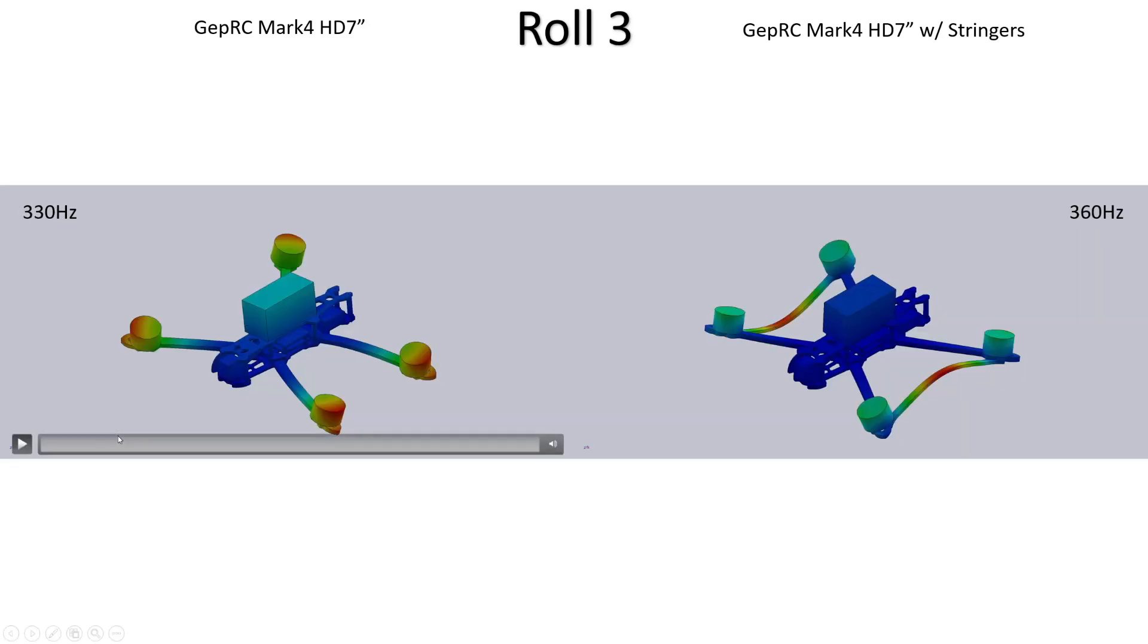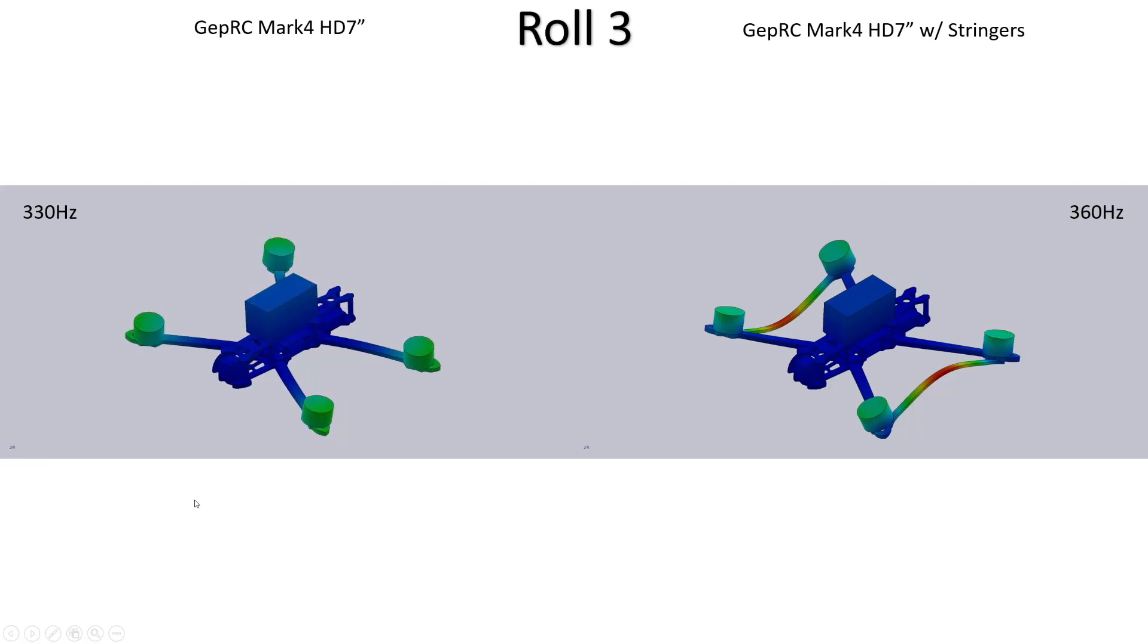If we look now at the third roll mode we can see that without the stringers the motors are moving close to each other and then further away again.